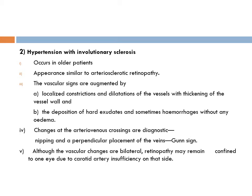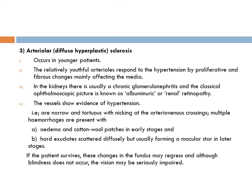Find out details of Gunn sign, Bonnet sign, and Salus sign — at what level each occurs, first or second AV crossing. You should also find out other arteriosclerotic changes like copper wire appearance and silver wire appearance, which are included in arteriosclerotic retinopathy as well as hypertension with involutionary sclerosis. These changes are generally bilateral; retinopathy confined to one eye may indicate carotid artery insufficiency on that side.